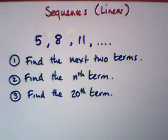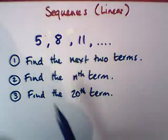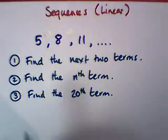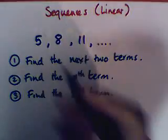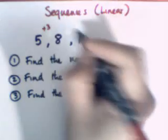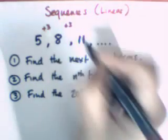Okay, we're going to start looking at linear sequences now. Hopefully you can see here that the 5 and the 8, and the 8 and the 11, have a difference between the numbers of 3. So if we wanted to find the next two terms, we would look at this difference here, plus 3 and plus 3.